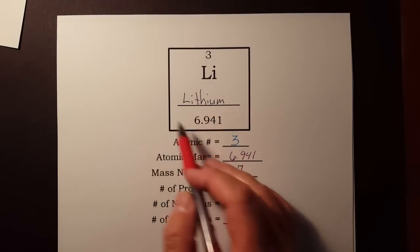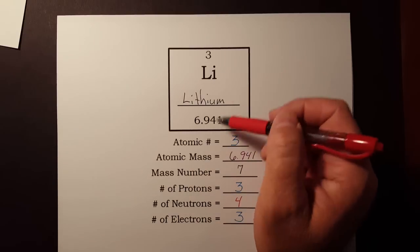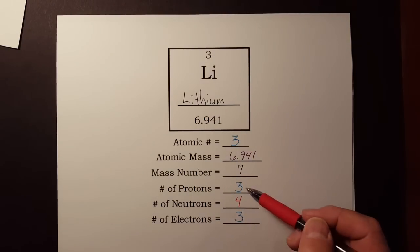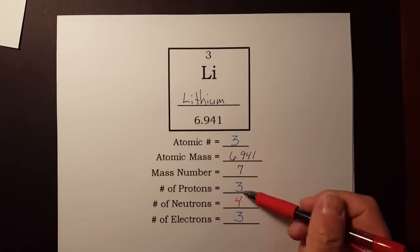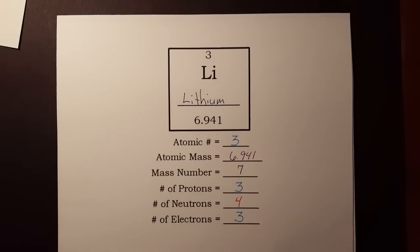That's all it takes. The little bit of information they give us in the box, these two numbers all by themselves will be able to figure out how many protons, how many neutrons, and how many electrons in the neutral atom.